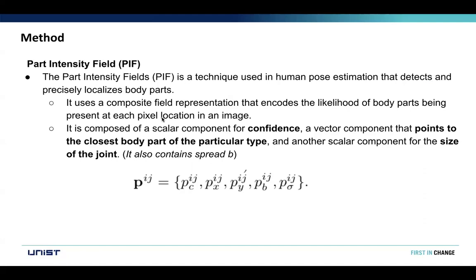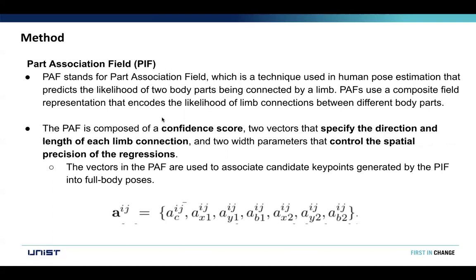You can see the equation below. Part Association Field (PAF) is a technique used for human pose estimation that predicts the likelihood of two body parts being connected by a limb. PAF uses a composite field representation that encodes the likelihood of a limb connection between different body parts. It is composed of a confidence score, two vectors that specify the direction and length of each limb connection, and two width parameters that control the spatial precision of the regression. The vectors in the PAF are used to associate candidate keypoints generated by PIF into full body poses.